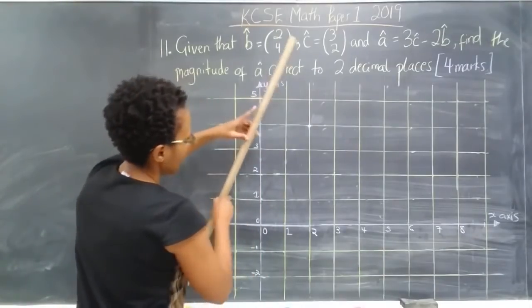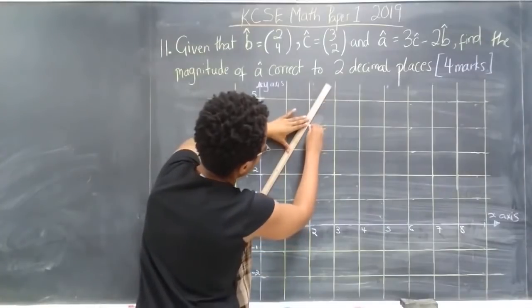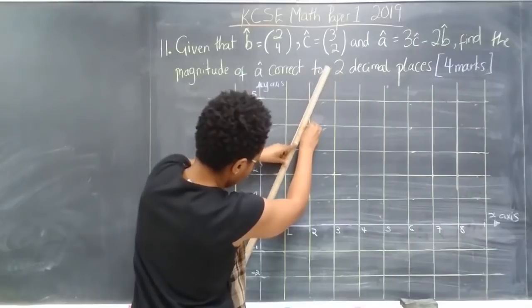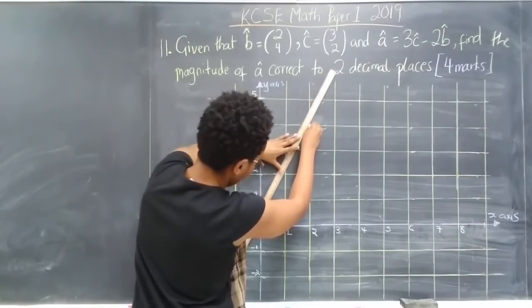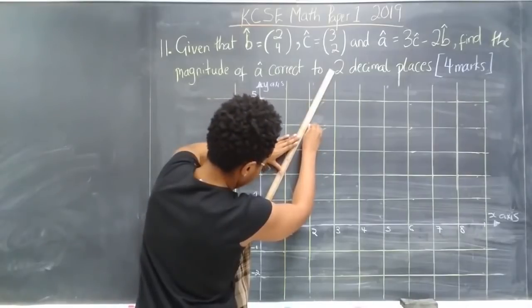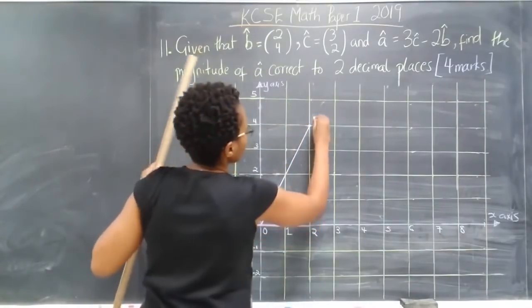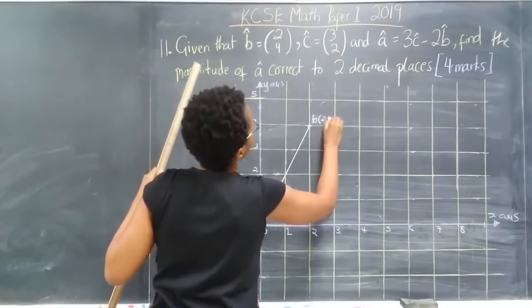And then you can draw up a vector to join that point to the origin. I'll just draw that. So that's our point B, and it has coordinates (2, 4).